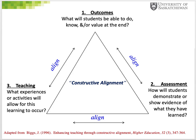When we use constructive alignment, we are focused on the alignment between these three key elements: what we want students to learn, or the outcomes; how we will know they have learned it, or the assessment; and the experience we can provide, or direct students towards, that allow for this learning to take place — the teaching and learning activities.